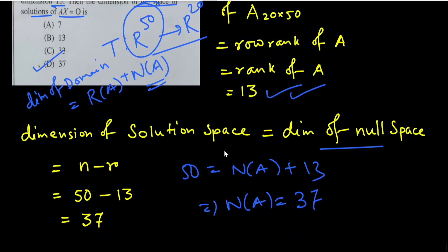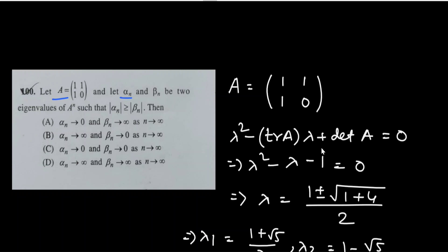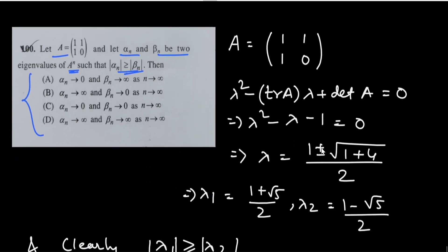The next question: let A = [[1,1],[1,0]] and α_n, β_n be the eigenvalues of A^n with |α_n| ≥ |β_n|. We first find the eigenvalues of A using λ² − tr(A)·λ + det(A) = 0, giving λ₁ = (1 + √5)/2 and λ₂ = (1 − √5)/2.